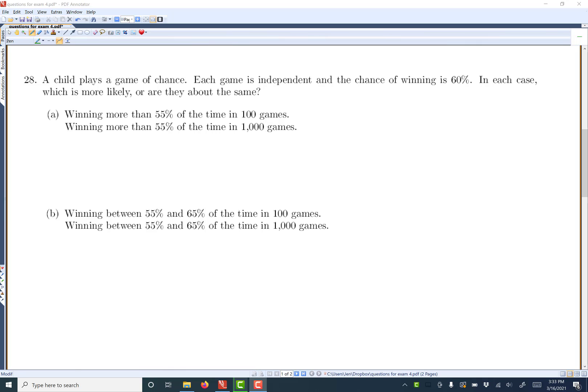In this problem, a child plays a game of chance. Each game is independent and the chance of winning is 60%. In each case, which is more likely or are they about the same? To win more than 55% in 100 games or more than 55% in a thousand games?